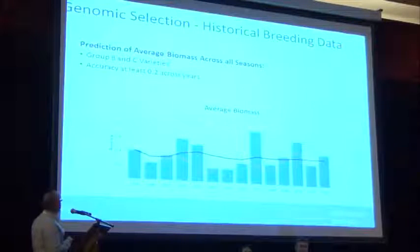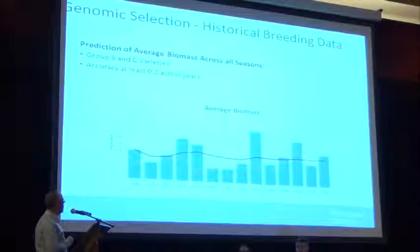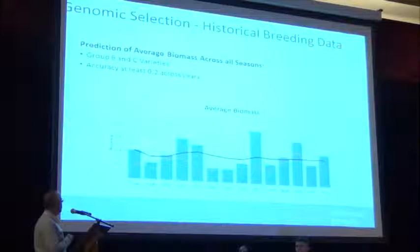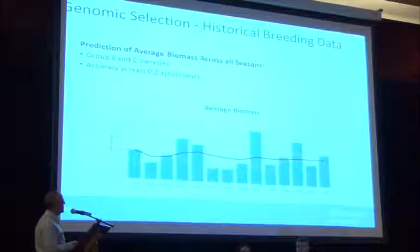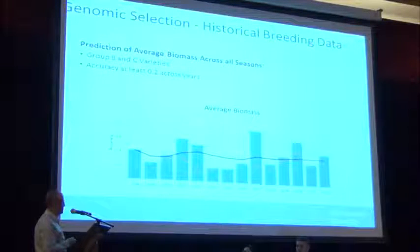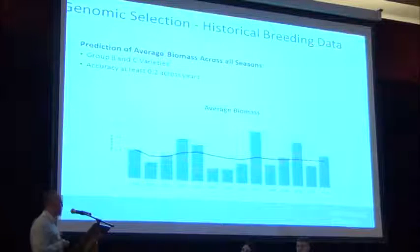Looking at average biomass across all years, broad-sense heritability varied somewhat across years. The rolling average accuracy across years and within-year accuracy bars show at least 0.2 accuracy in any given year for biomass yield — quite encouraging. This is for B and C varieties only.